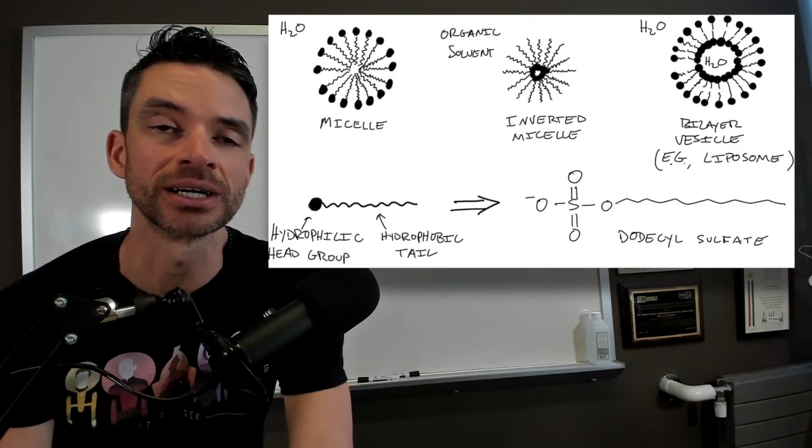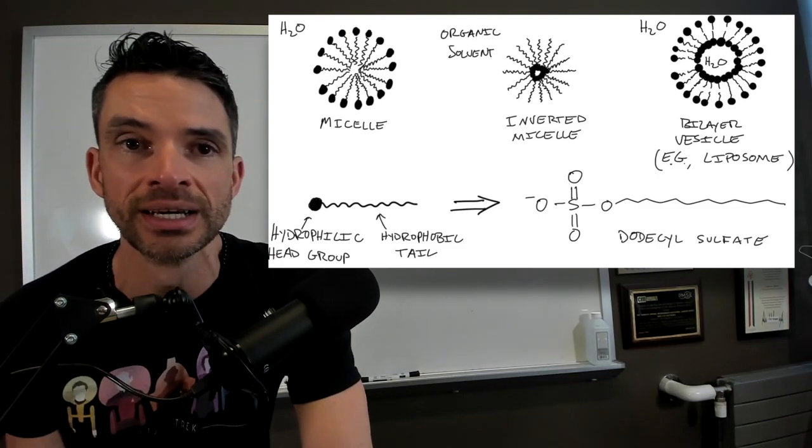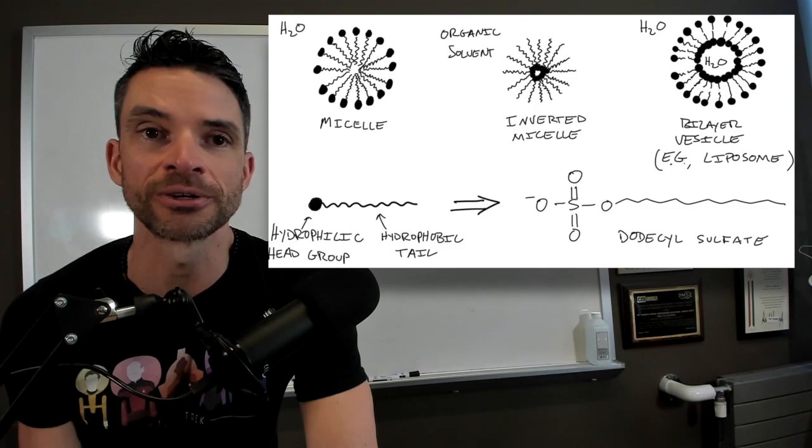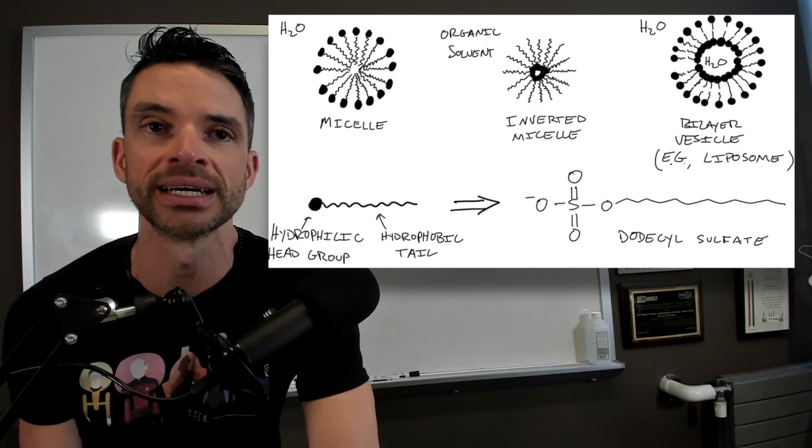Here is a structure of a typical amphiphile called sodium dodecyl sulfate, which consists of a hydrophilic head group and a hydrophobic tail.